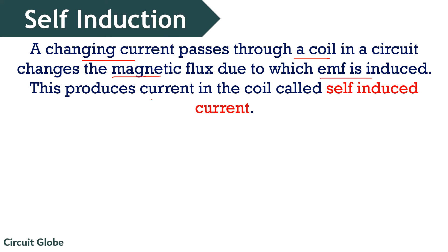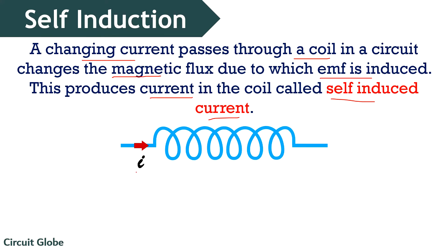Due to this induced EMF, current is produced in that coil and this current is known as self-induced current. To understand the same, consider the coil shown below. If this current is of changing nature, then due to this changing current, a changing magnetic field will be generated and so the magnetic flux also changes. Due to the varying magnetic flux, EMF is induced in this particular coil according to Faraday's law. And once EMF is induced in the coil, then an induced current will begin to flow through the coil.